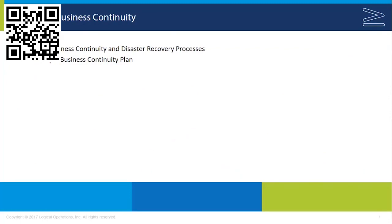In this chapter, we looked at ensuring that we can maintain business continuity in the case of a disaster. Regardless of the security controls we put in place, we can still encounter worst-case scenarios. We examined the different elements of the business continuity plan and how it is crucial for any organization to get their systems back up and running as quickly as possible.